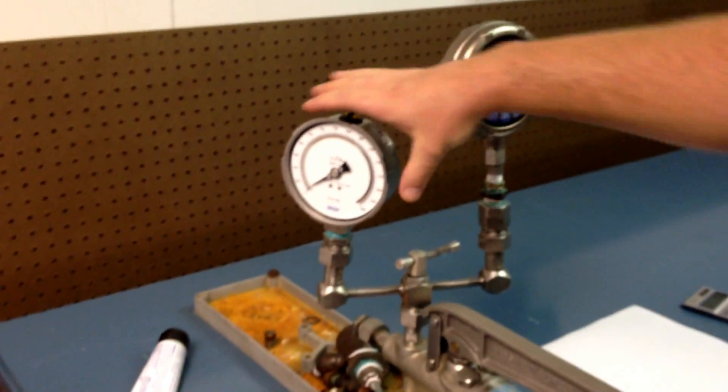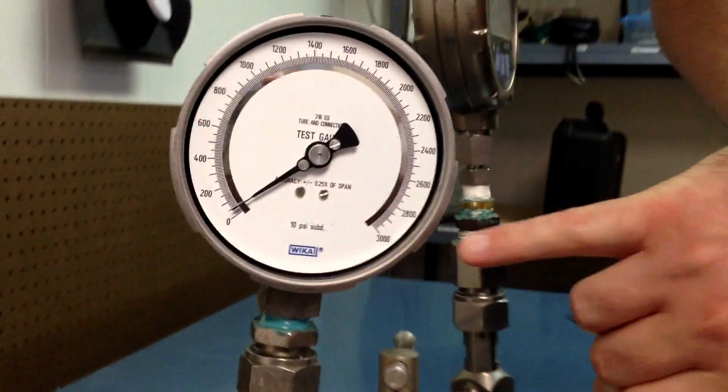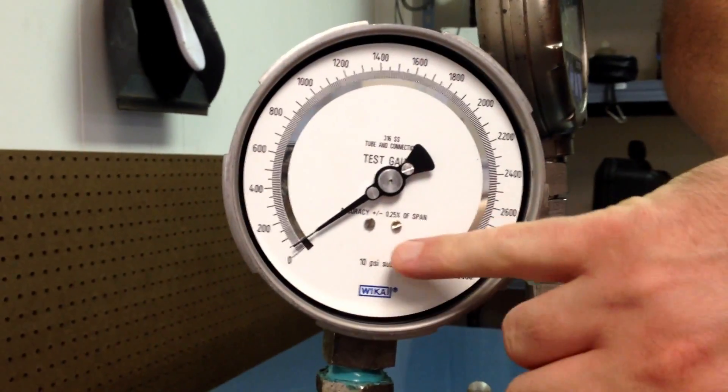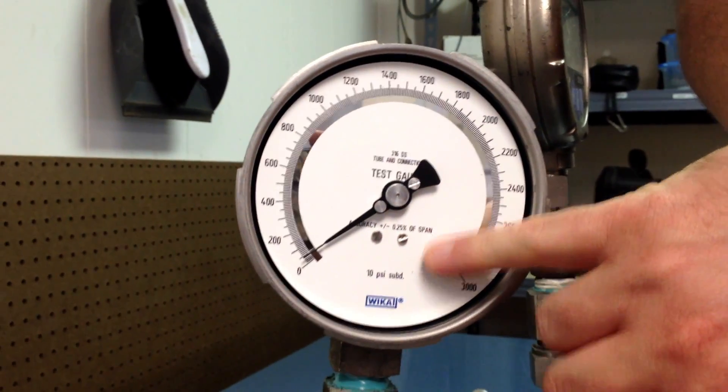So the gauge under test is this WECA test gauge, 0 to 3,000 PSI, and it's 0.25% of span or full scale.